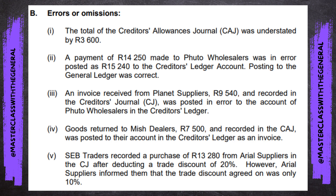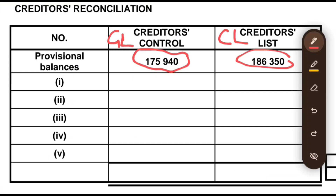Creditors allowances are returns we take back to our suppliers to say these goods are defective — we don't want them — and we'd like you to reduce them from our balance. Creditors allowances reduce the credit balance. In this case the creditors allowances journal was understated, meaning there's R3,600 that has not been subtracted — it was supposed to be subtracted but hasn't been. So on the creditors control side we subtract R3,600, and the creditors list is unaffected.